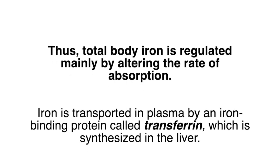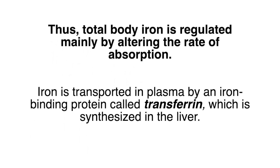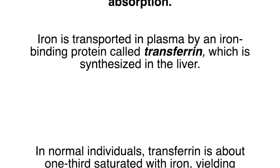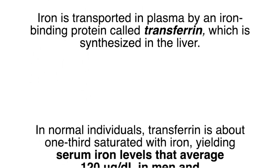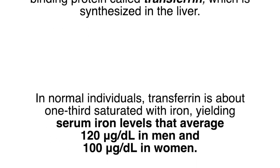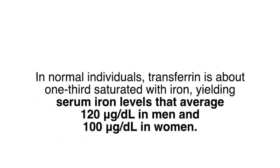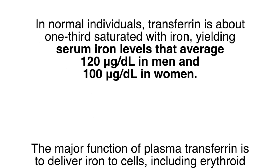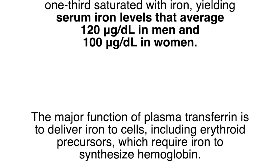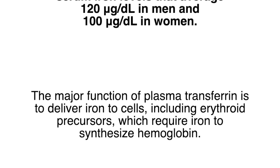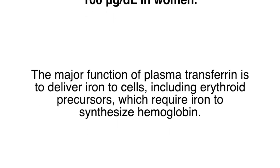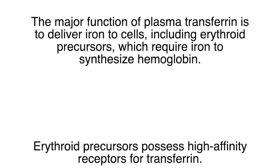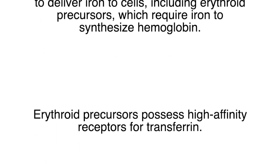Iron is transported in plasma by an iron-binding protein called transferrin, which is synthesized by the liver. In normal individuals, transferrin is about one-third saturated with iron, yielding serum iron levels that average 120 micrograms per deciliter in men and 100 micrograms per deciliter in women. The major function of plasma transferrin is to deliver iron to cells, including erythroid precursors which require iron to synthesize hemoglobin. Erythroid precursors possess high-affinity receptors for transferrin.